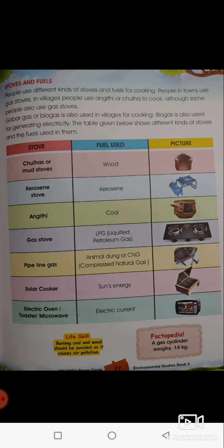The next stove is a gas stove, followed by pipeline gas. There is also biogas — its fuel is made from animal dung, like cow dung, which is put together in a pit, compressed, and used. Another word for it is CNG — compressed natural gas — and this can also be used for cooking.